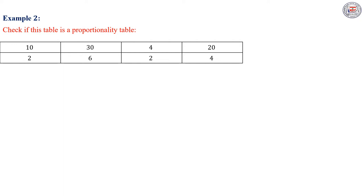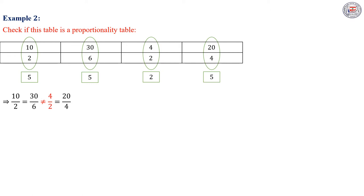Another example: check if this table is a proportionality table. We divide 10 by 2 — we get 5; 30 by 6 we get 5; 4 by 2 we get 2; and 20 by 4 we get 5. Then 10/2 = 30/6 = 20/4, but they are not equal to 4/2. Therefore, this table is not a proportionality table.